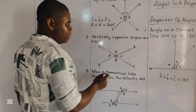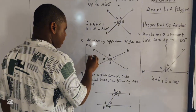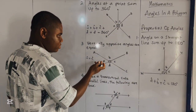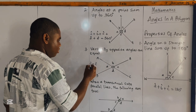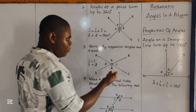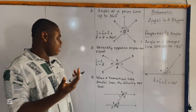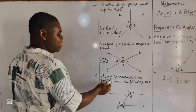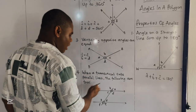The next property: vertically opposite angles are equal. When angles are placed this way they are vertically opposite, so angle A is equal to angle C. Also, angle B is equal to angle D — those are vertically opposite. Another name for vertically opposite angles is X-angles.